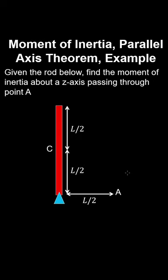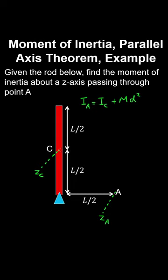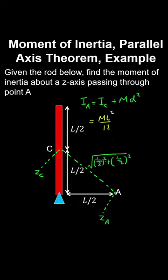Let's find the moment of inertia of a rod about the z axis through point A. We know the moment of inertia about the centre-of-mass z axis. Because these axes are parallel we use the parallel axis theorem, where the squared distance d² from the centre-of-mass axis to the axis through A is obtained using Pythagoras' theorem. Substituting the previously derived centre-of-mass moment of inertia and d², we obtain the result.